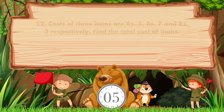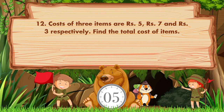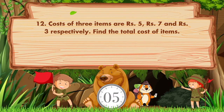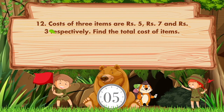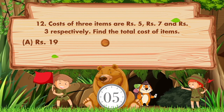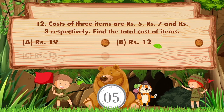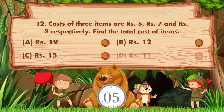Costs of three items are 5 rupees, 7 rupees, and 3 rupees respectively. Find the total cost of items. Option a is 19 rupees, option b is 12 rupees, option c is 15 rupees, option d is 11 rupees.